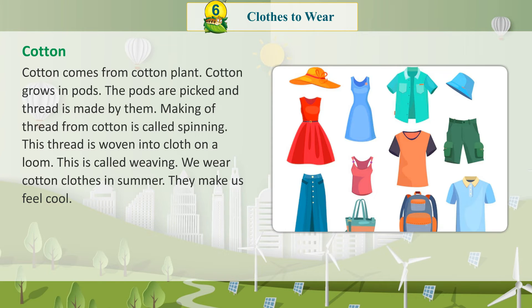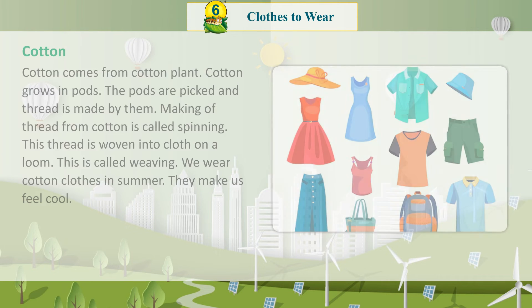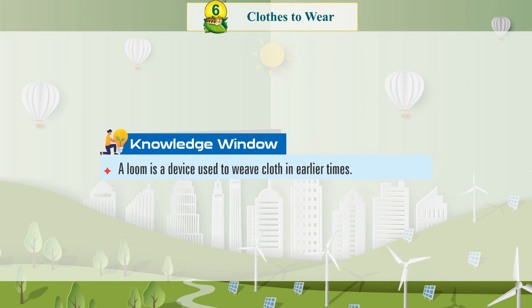We wear cotton clothes in summer. They make us feel good. Knowledge Window: A loom is a device used to weave clothes in earlier times.